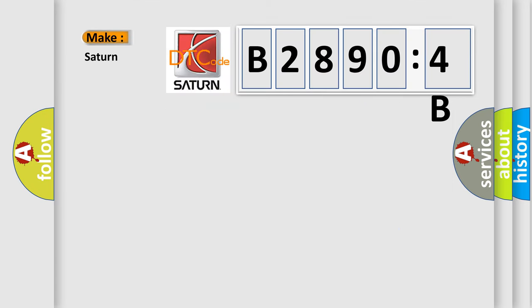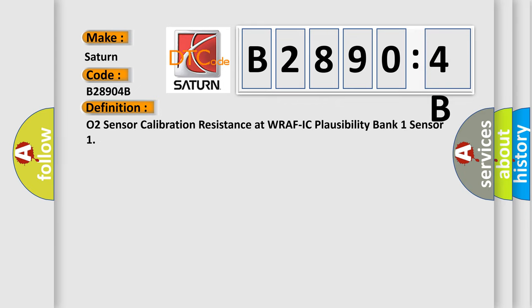So, what does the diagnostic trouble code B28904B interpret specifically for Saturn car manufacturer? The basic definition is: O2 sensor calibration resistance at WRAFIC plausibility bank 1 sensor.